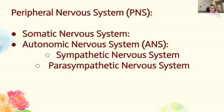Then we have the autonomic nervous system, which is broken into the sympathetic and parasympathetic nervous systems. The autonomic nervous system regulates involuntary bodily functions to maintain homeostasis and respond to stress. The sympathetic nervous system prepares the body for the fight-or-flight response during stressful situations — it increases heart rate, dilates the airways, and redirects blood flow to vital organs. The parasympathetic nervous system promotes rest-and-digest activities, conserves energy, supports digestion and relaxation, decreases heart rate, and enhances digestion.